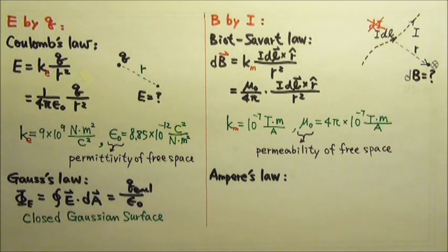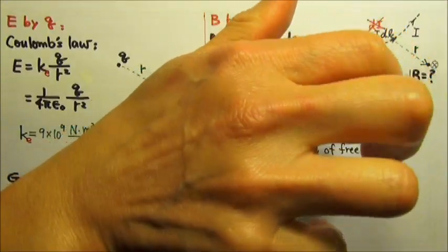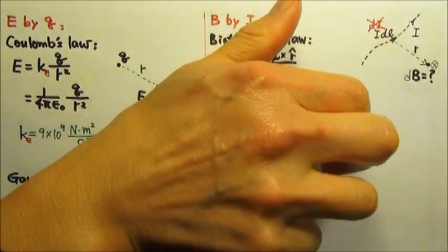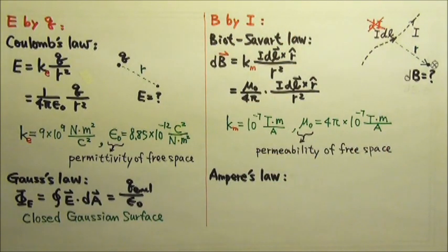But we actually do not have to use the cross product right-hand rule to find the direction of dB. We can also use our thumb to follow the current. And the curved four fingers will point into the paper on that side. So dB goes into the paper.